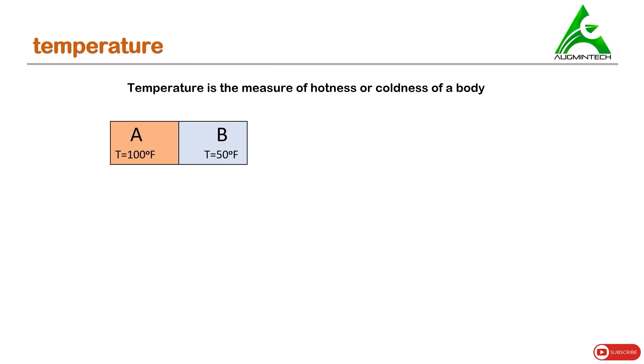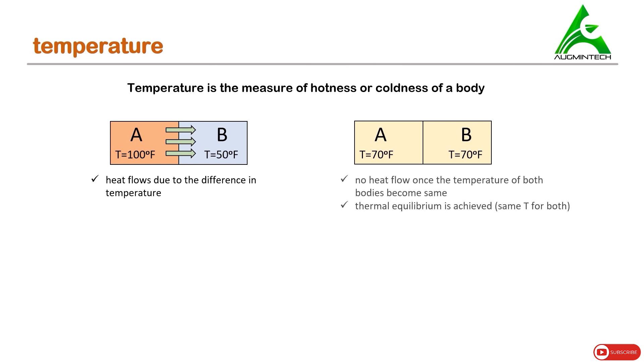Due to the difference in temperature, heat flows from a body at higher temperature to a body at lower temperature. As the heat keeps on flowing, the temperature of A becomes lesser and temperature of B becomes higher. There comes a time when temperature of each of the bodies become equal. No heat flows once the temperature of both bodies become same, and we say that thermal equilibrium is achieved. Thermal equilibrium means obtaining same temperatures.